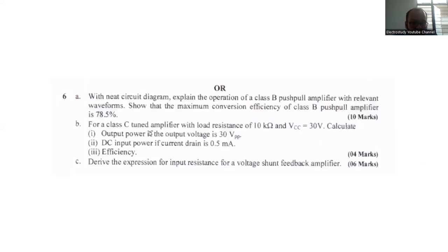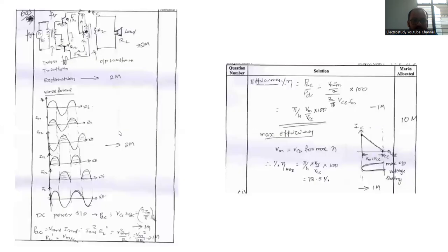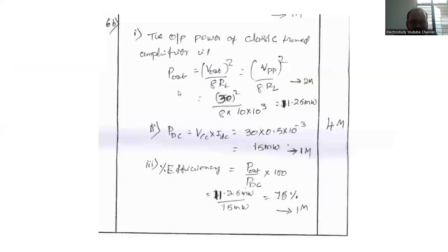Then for class C tuned amplifier with the load resistance of 10K and VCC 30V, calculate the following: efficiency, then DC power, then output power. Those things you can calculate. What is the total efficiency you are able to get, the efficiency you will be getting from the class C amplifier.